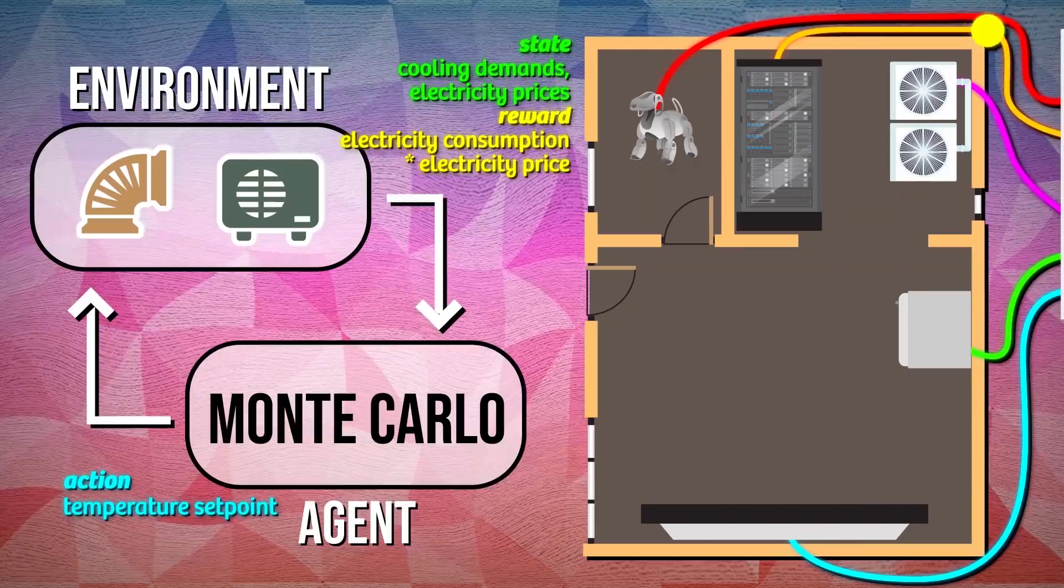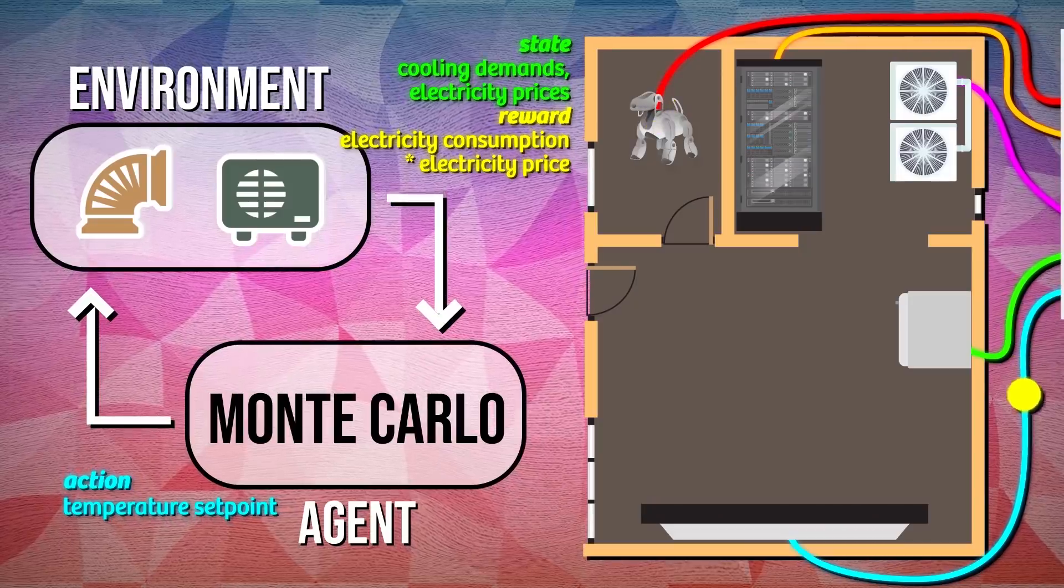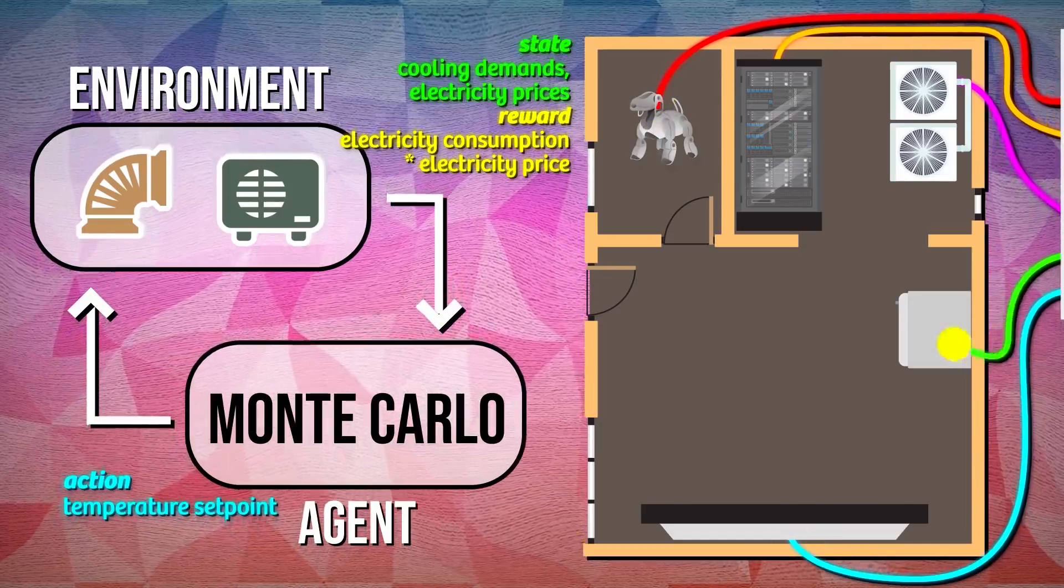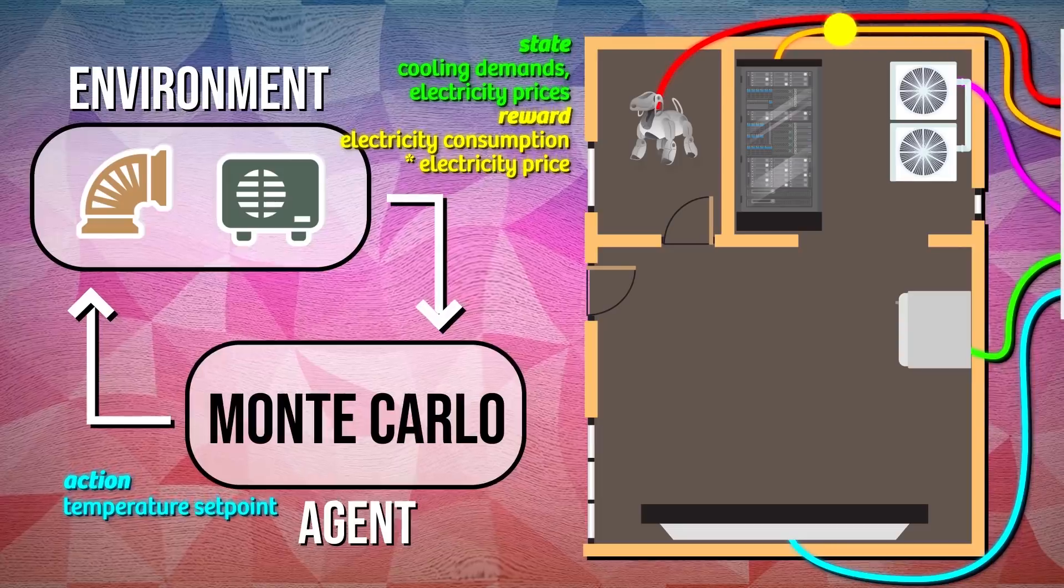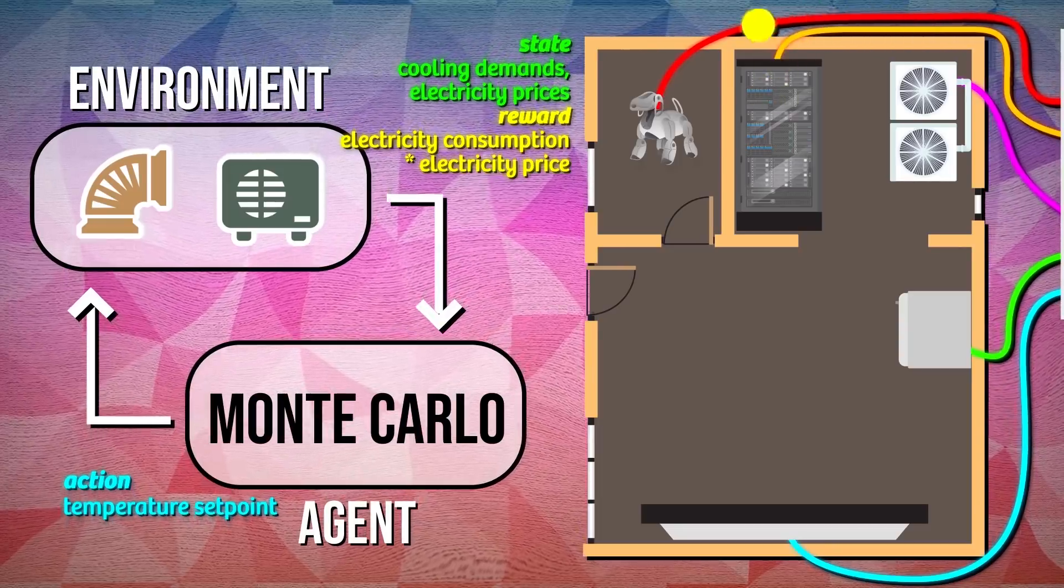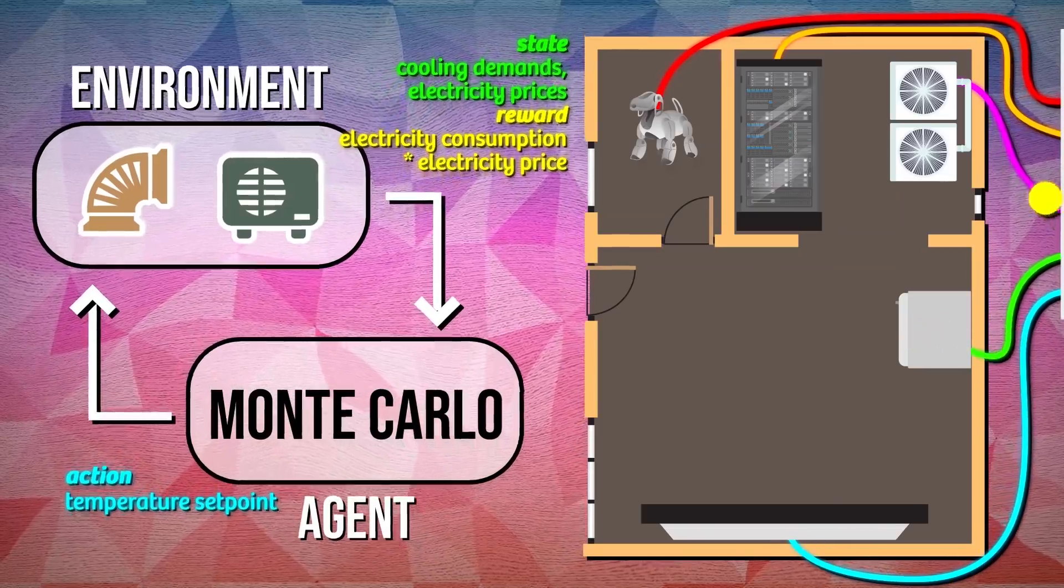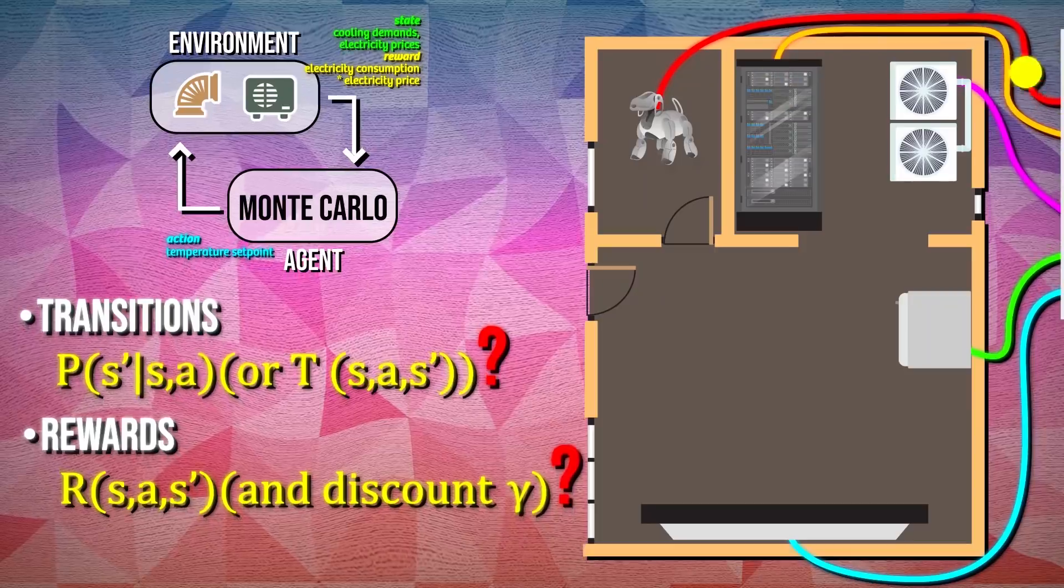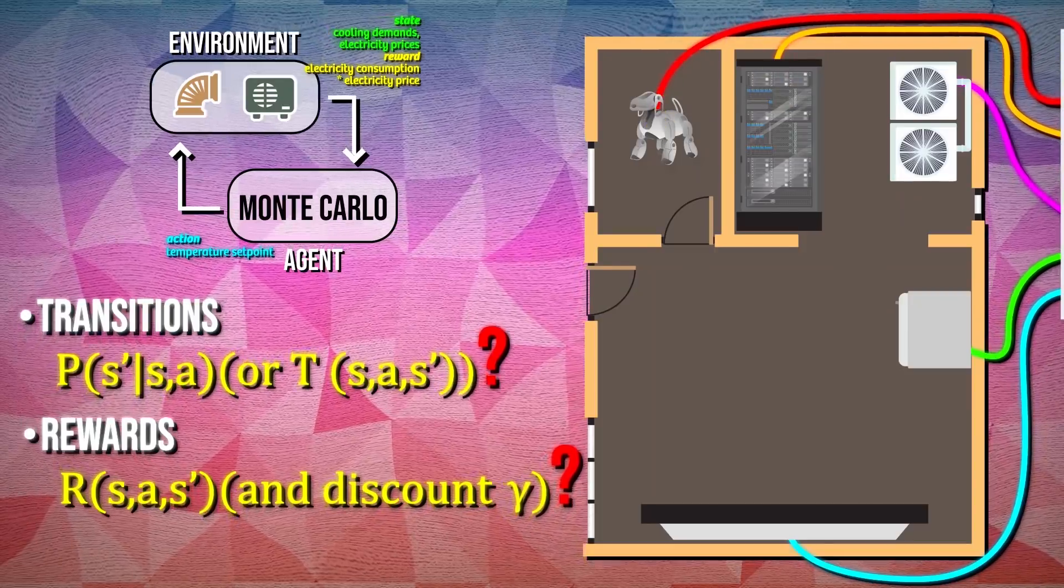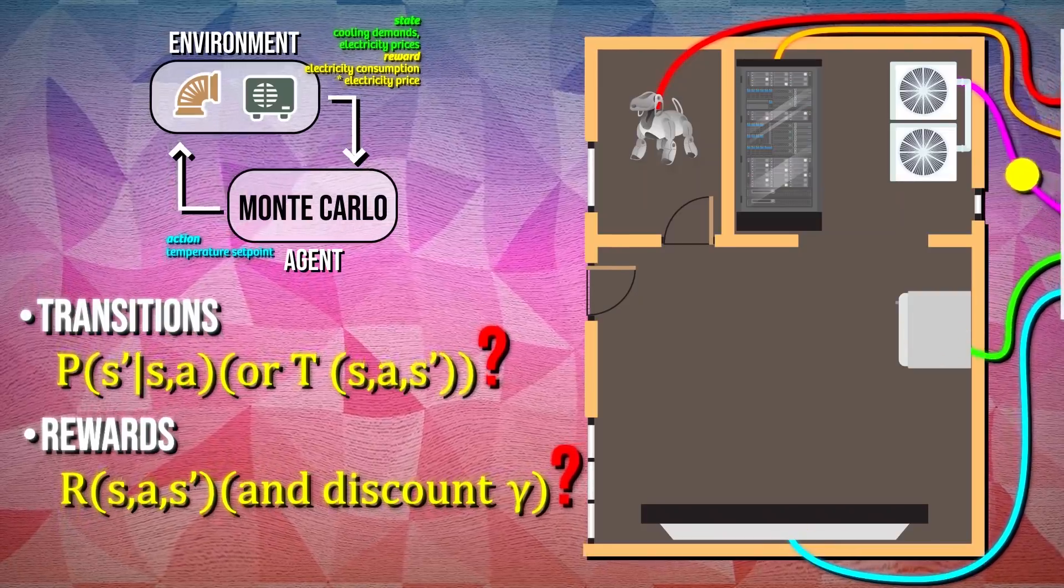There exists an optimal policy here such that if we were to give it a state, in this case that would be the cooling demand and the electricity price, it would know exactly what temperature the thermostat should be set at such that we are optimally saving money on electricity by cooling our room as much as necessary when necessary. Our adaptive, real-time, reward-based system needs to learn this optimal policy. And since we don't know the reward function or the transition function beforehand, we have to compute our rewards and transitions as they happen in real time. We'll want to use a model-free technique like Monte Carlo to learn the optimal policy.